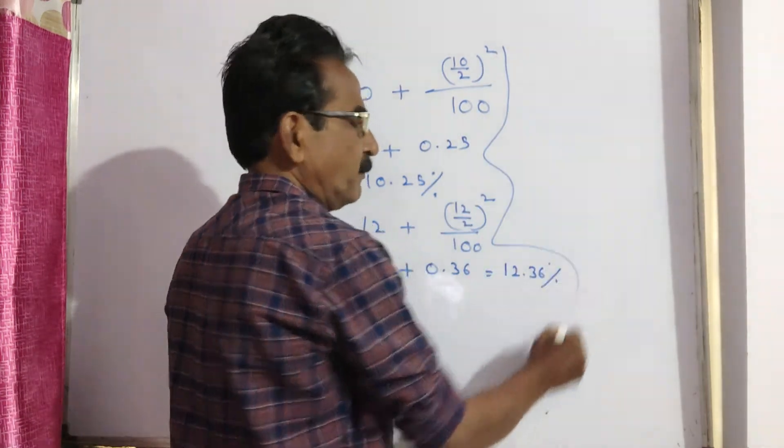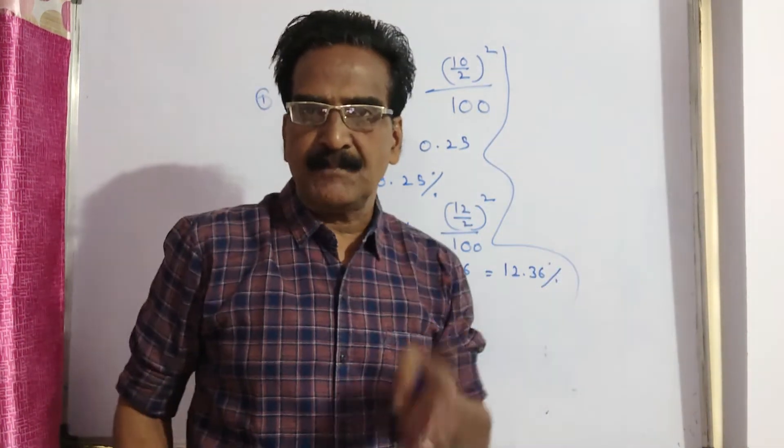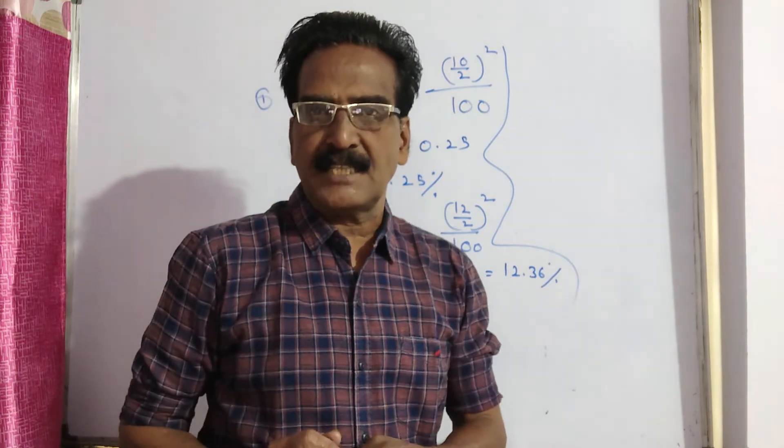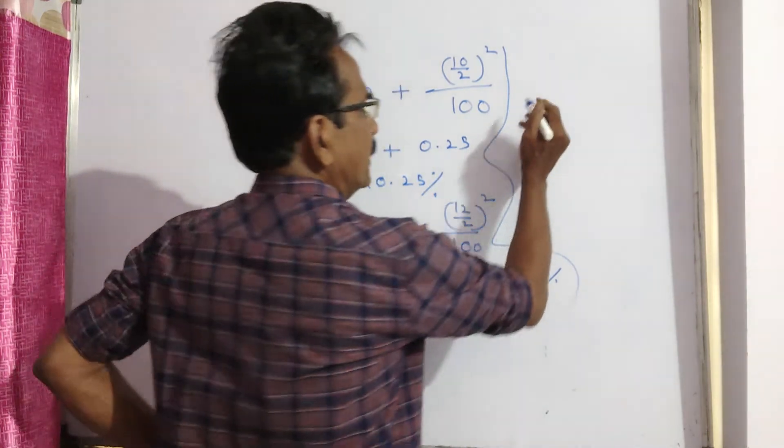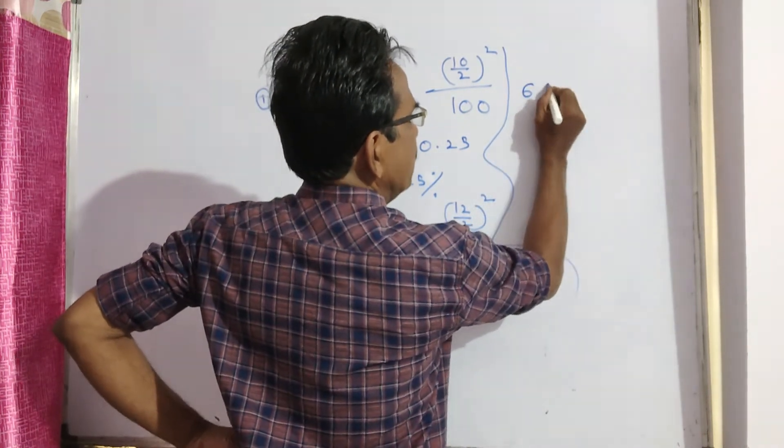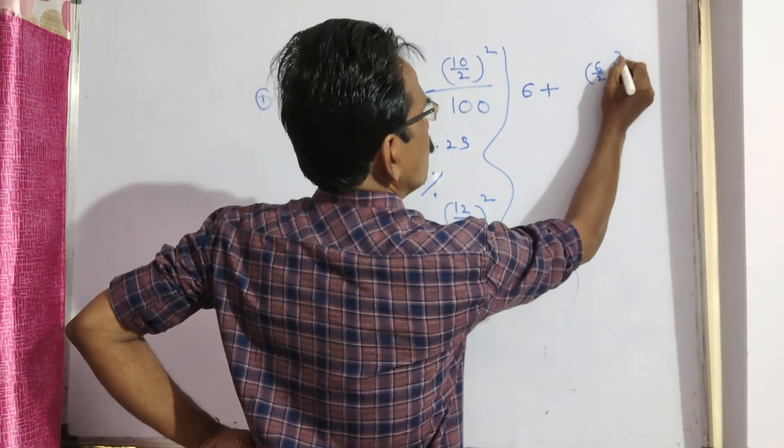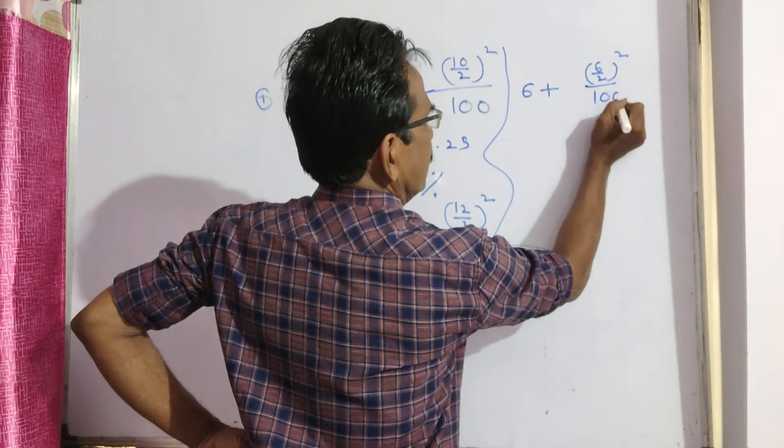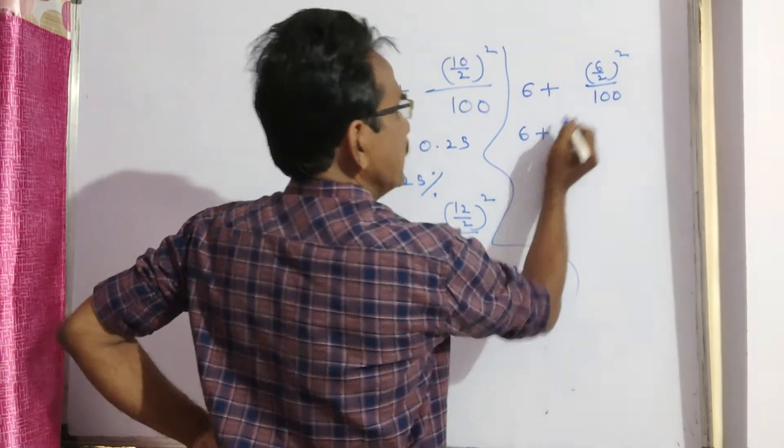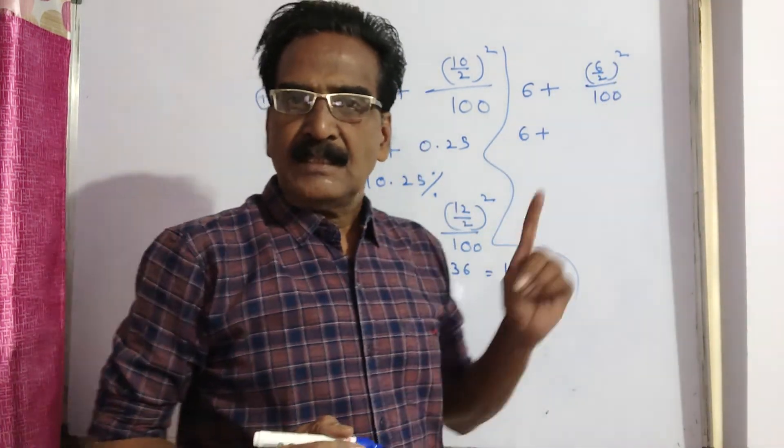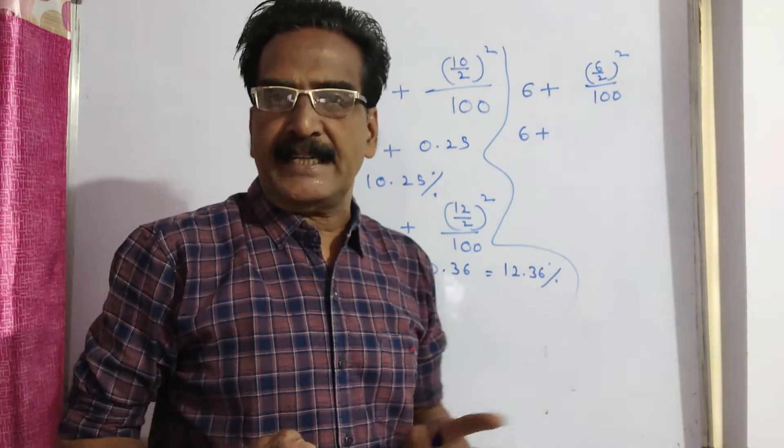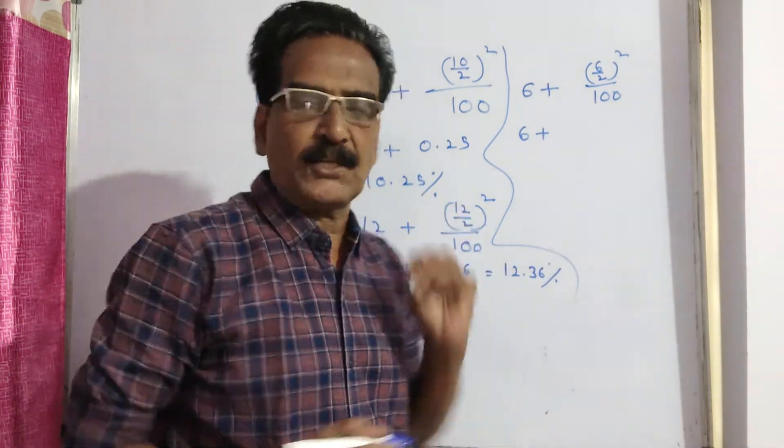I shall consider one more example. Suppose if the rate of interest is 6%, then the effective rate of interest is 6 plus 6 by 2 whole square by 100. 6 plus 6 by 2 is 3, 3 square is 9, 9 by 100 means 0.09. So 6.09 percent is the effective rate of interest.